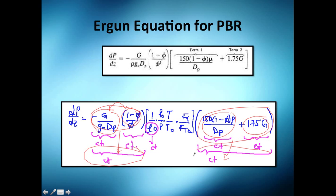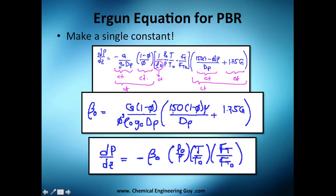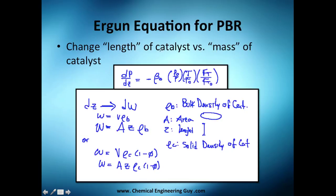After grouping all constants, we arrive at one super-constant. The only things that are not constant are pressure — which changes along the reactor — and temperature, which we will keep for later use in Chapter 8 on non-isothermal design. For isothermal design, temperature is simply 1. The change in molar flow rate is also accounted for. Now we have the differential pressure with respect to bed length, but we want it with respect to catalyst mass W instead of length C.